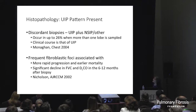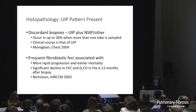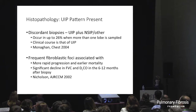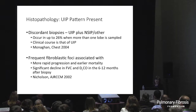Assuming we get to a diagnosis of UIP on a biopsy, a couple of points: if you're fortunate enough to have a surgeon who gives you wedge biopsies of more than one lobe, up to a quarter of the time in one study they're discordant — UIP pattern in one biopsy and NSIP pattern in the other lobe. In a series examining those cases, if either biopsy showed UIP, the clinical course was that of UIP. The bottom line is that the UIP pattern will trump an NSIP pattern if both are present.